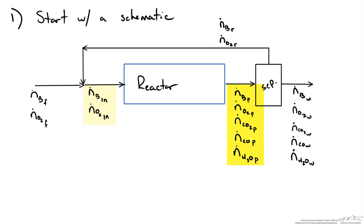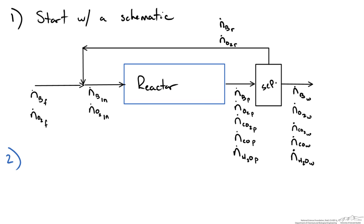Coming out of our reactor we have butane, oxygen, carbon dioxide, carbon monoxide, and water. Out of our separator we also have all five of those species exiting as a waste stream. If it is a waste stream, why have a reactor at all? Since we are combusting butane we are probably doing that to generate heat for some other part of our process. Now that we have our diagram set up we should fill in our details from the problem statement.